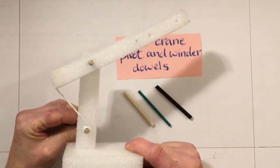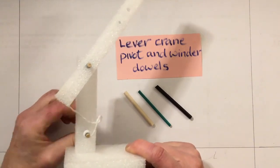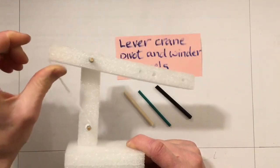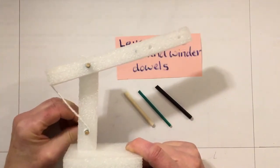We'll show you the winder in action. As you can see, it's winding up or releasing the string. There it is winding up and pulling on the long lever arm.